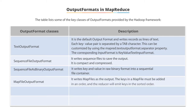Map file output format writes map files as the output. The keys in a map file are added in a specific order. The reducer then emits keys in that sorted order.